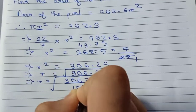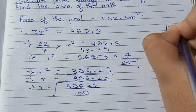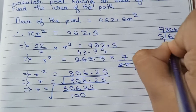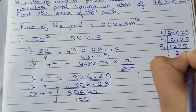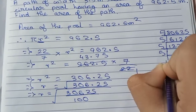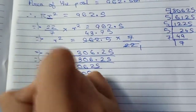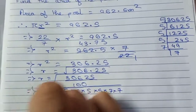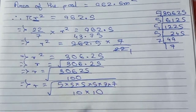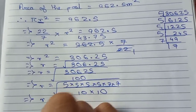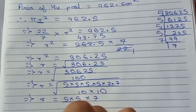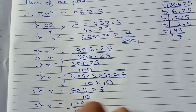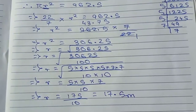We do prime factorization of 30625. First we cut by 5. Now we put our values: r equals root over 5 into 5 into 5 into 5 into 7 into 7, divided by 100, which we write as 10 into 10. So it becomes r equals 175 by 10, that is 17.5 meter. So this is the radius of the pool.